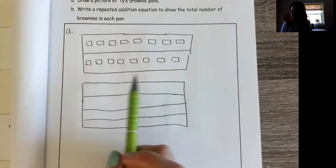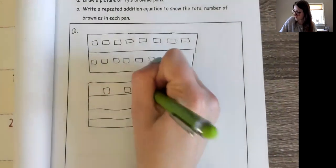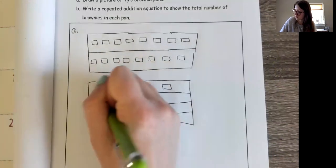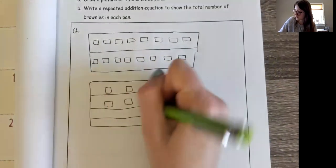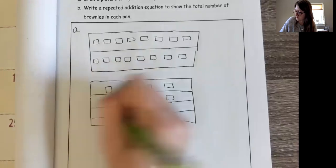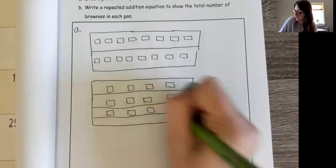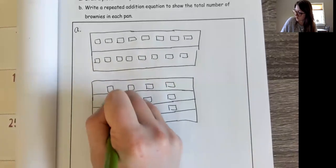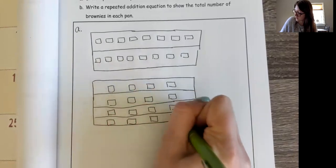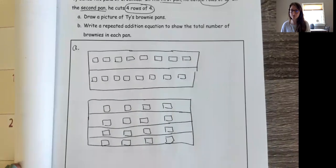And I know there are four brownies in each row. So I count four across for each of the four rows: one, two, three, four — repeated for each row. Okay, so I drew my picture.